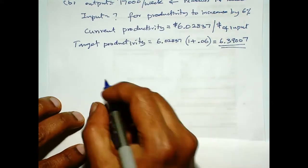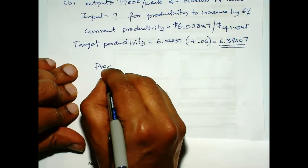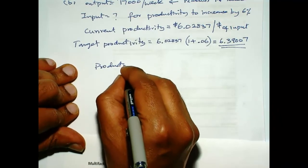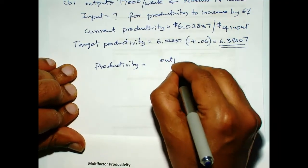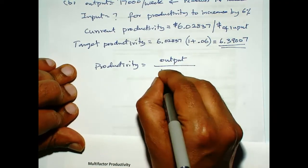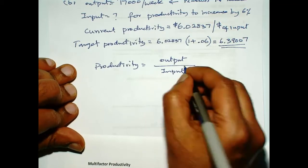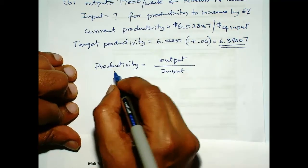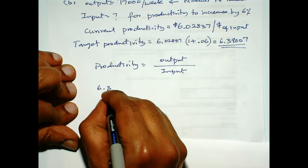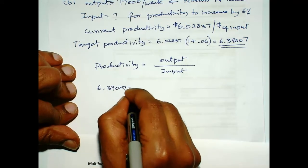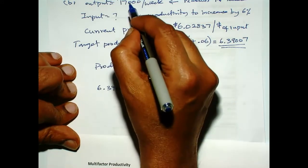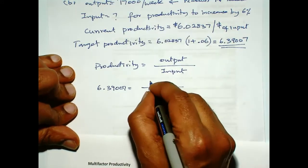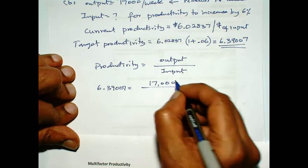Now, we know productivity is output over input. Now, the target productivity is 6.39007, you want to keep the output the same, which is $17,000. So, what is the input?